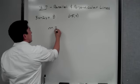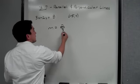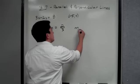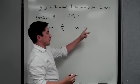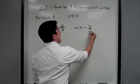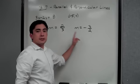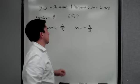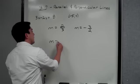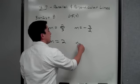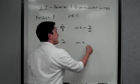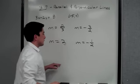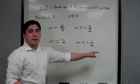For example, if one line has a slope of two-thirds, the perpendicular slope would be: switch the symbol to negative, then flip the fraction to get negative three-halves. Similarly, if m equals 2 — which is the same as two over one — the perpendicular slope would be negative one-half. Those slopes are perpendicular to each other.